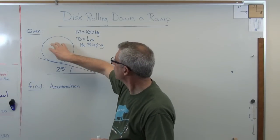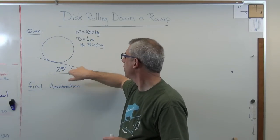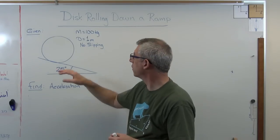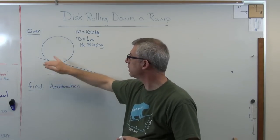So what I've got right now is a solid disk that's rolling down a ramp with an angle of 25 degrees. So what we're trying to find out is what's the acceleration of this disk.